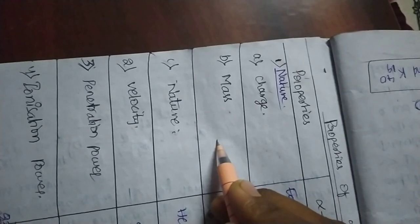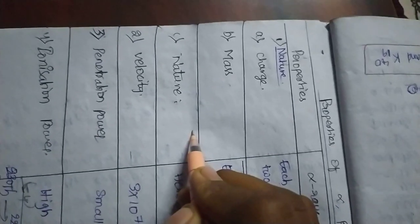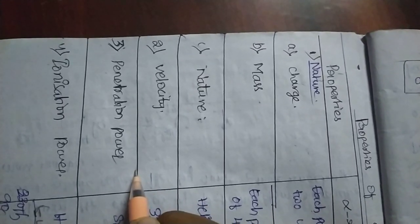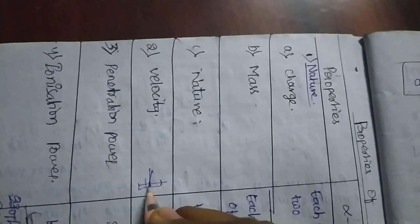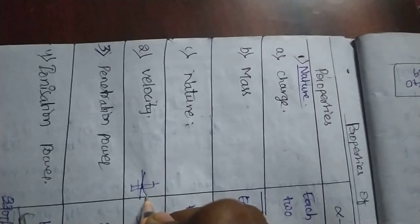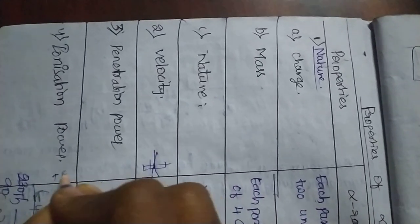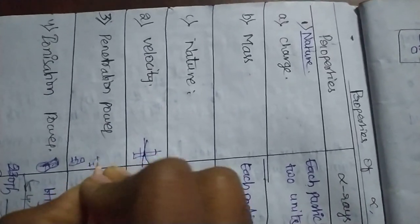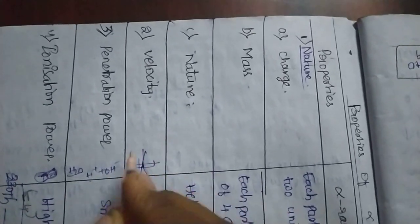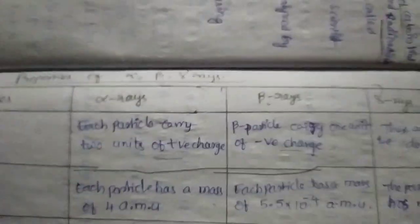Now coming to properties of alpha, beta, and gamma rays. The properties we will look at are: charge, mass, nature, velocity, penetration power — meaning how much the radiation can pass through an object — and ionization power, which refers to the ability to produce positive and negative charges in a medium.